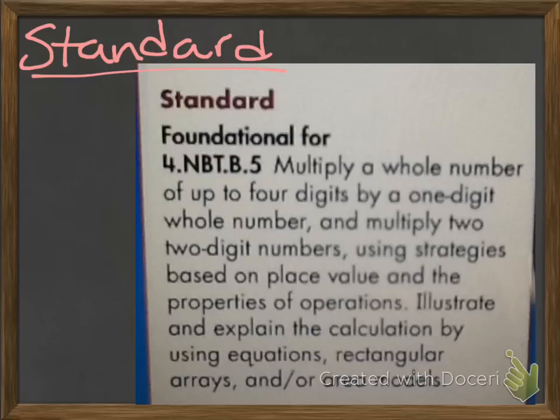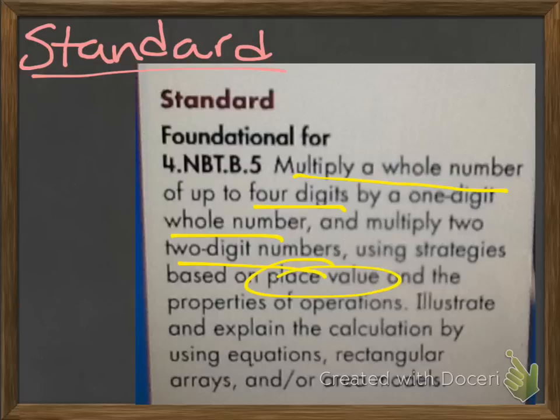Our standard is multiply a whole number of up to 4 digits by a 1-digit whole number and multiply 2-digit numbers using strategies based on place value and the properties of operation.